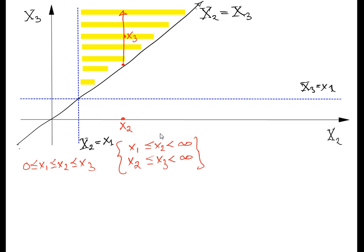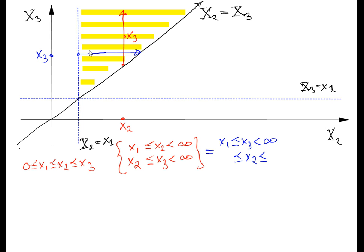That's not the only way to think about it. If we pick x3 first — and x3 equal to x1 is the boundary — we pick an x3 above x1, so x3 goes from x1 to infinity. Then x2 has to be between x1 and x3, so x2 goes from x1 to x3. Either one of these approaches should work.